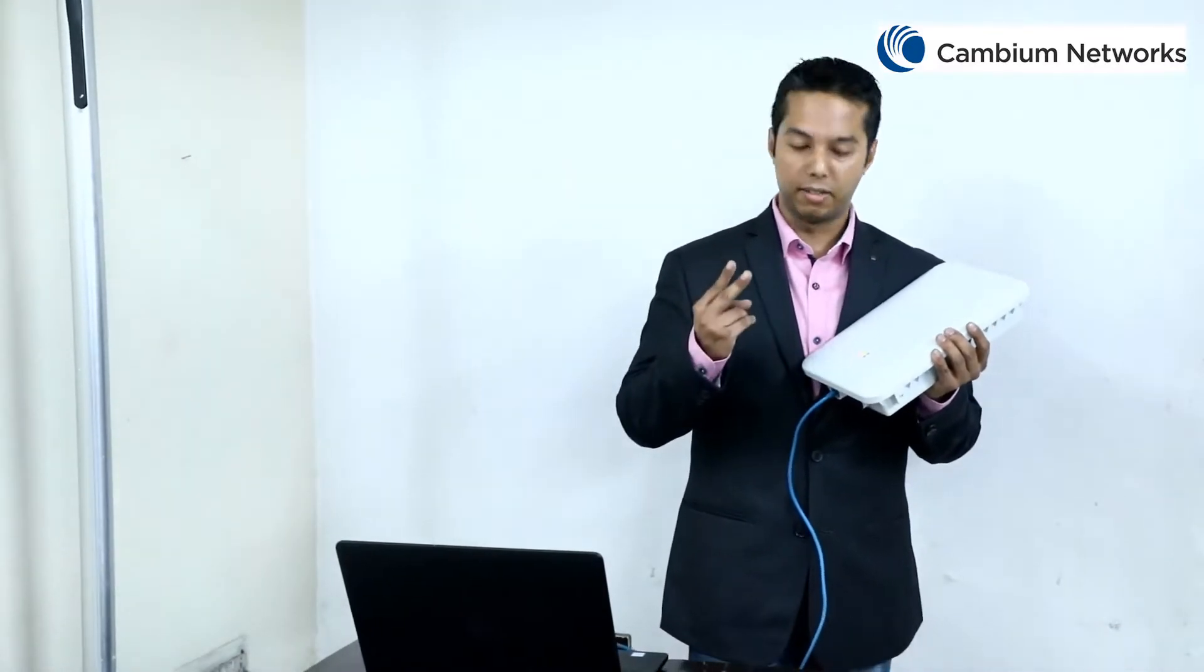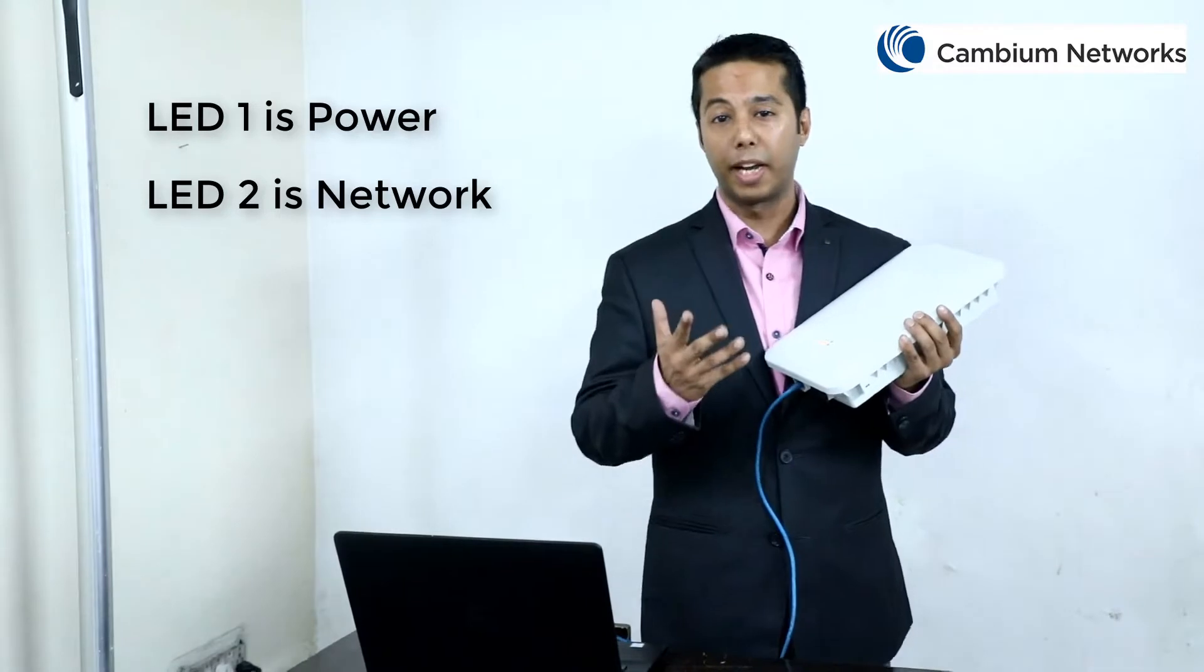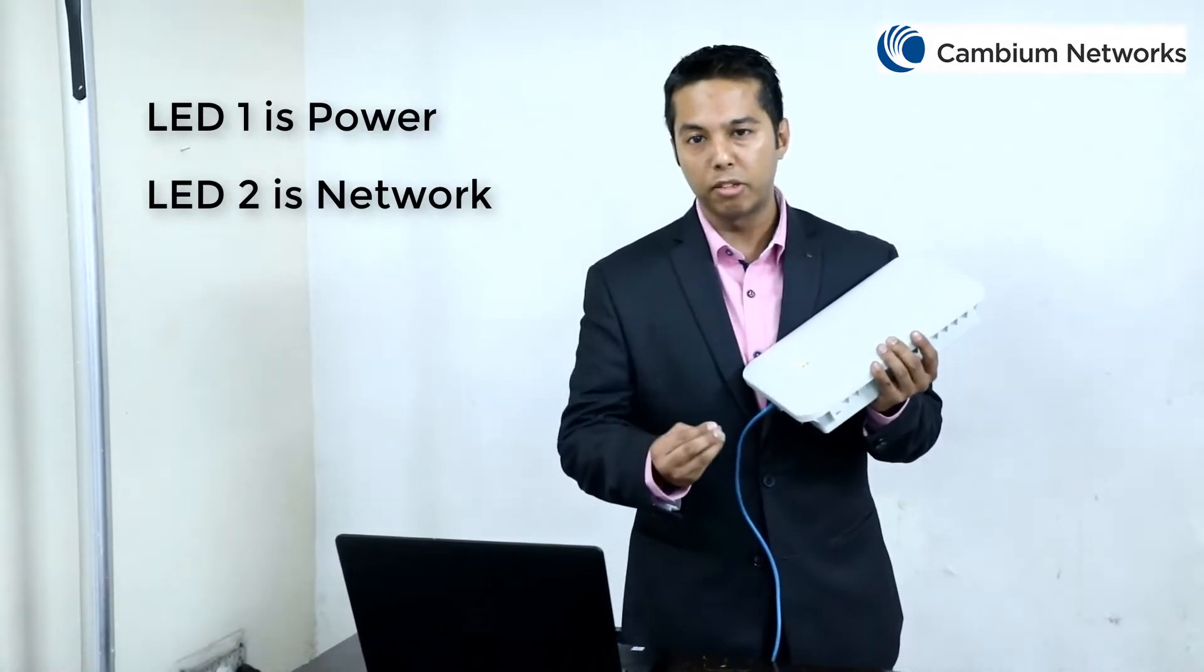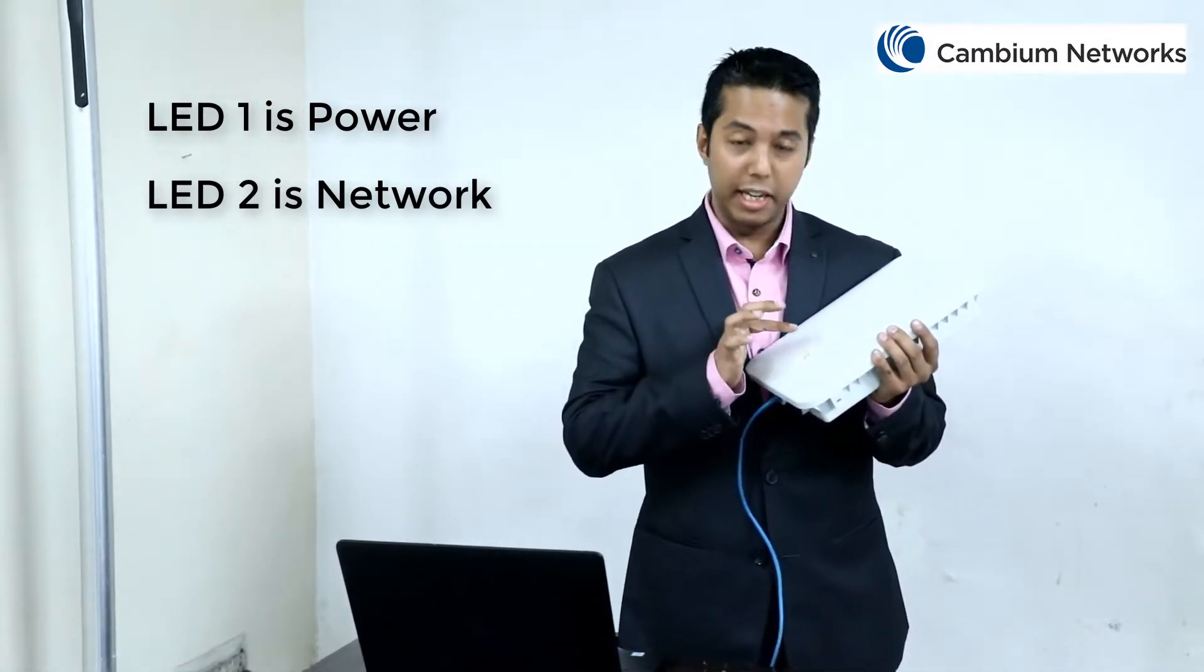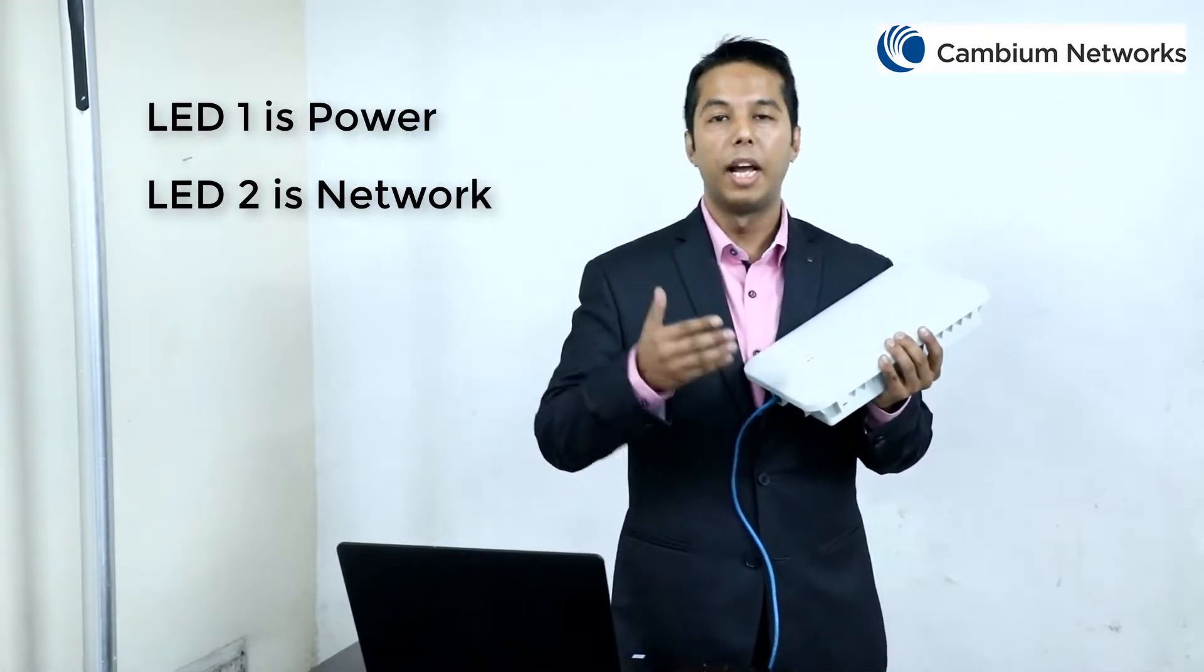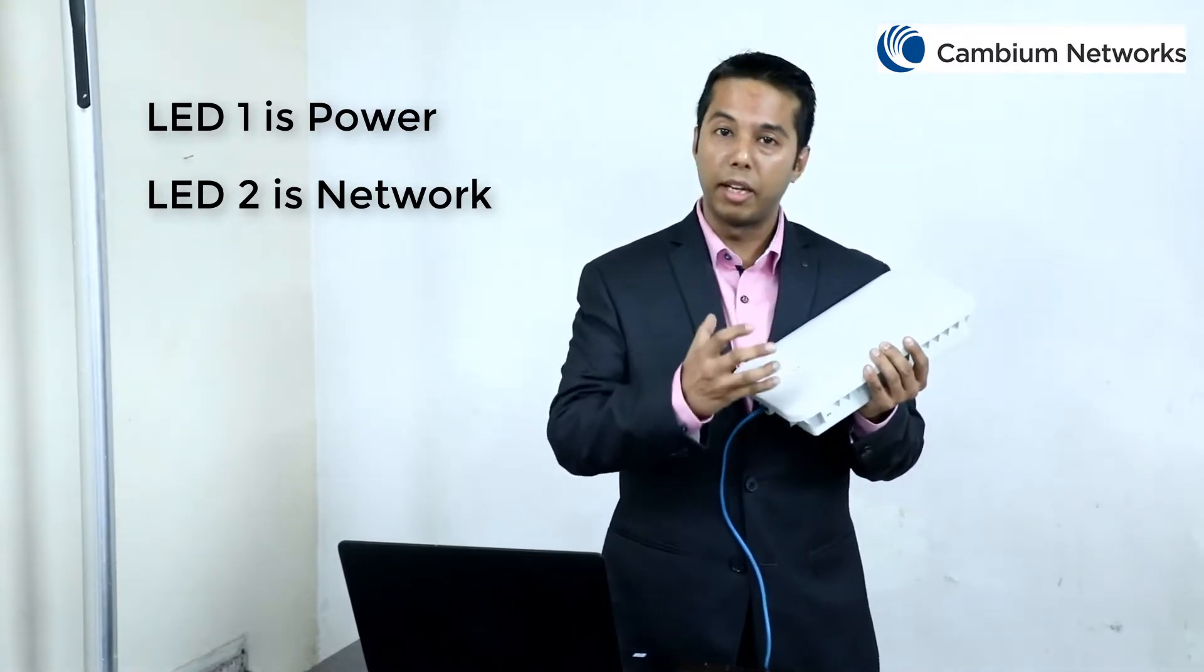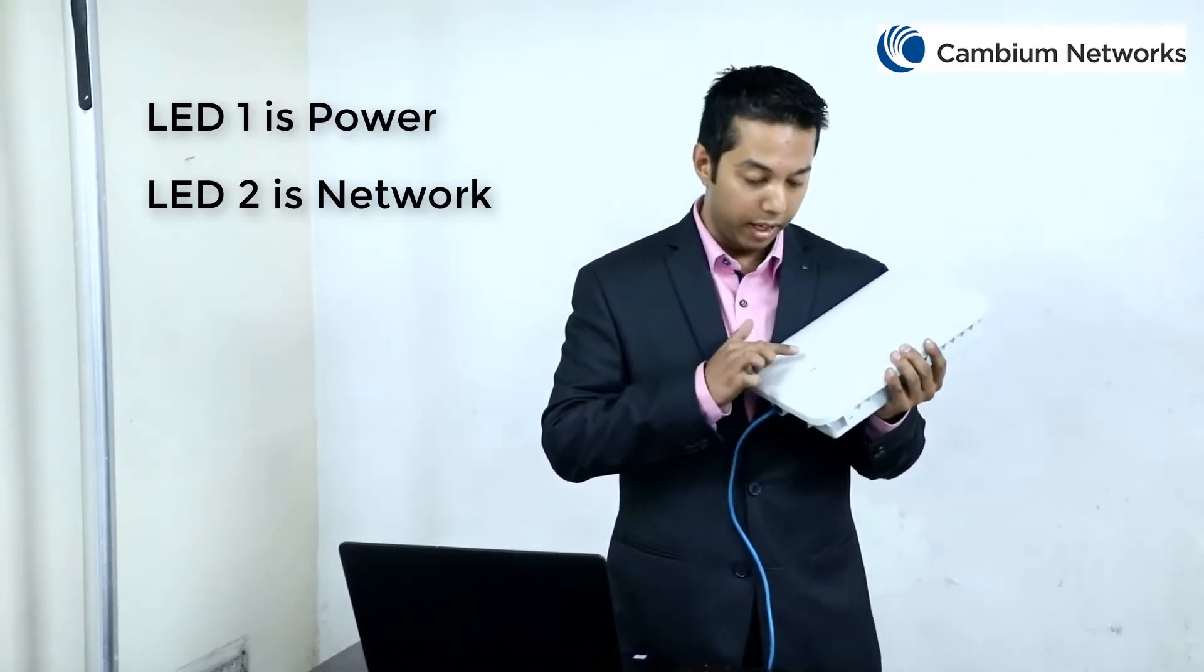As you can see, this access point comes with two LEDs. LED-1 is a power LED and LED-2 is a network LED. When the access point is booting up, the LED-1, which is the power LED, would glow amber in color. And once the access point boots up properly, this LED would glow green in color, the way it is depicted here.